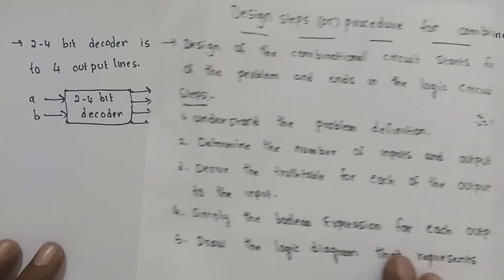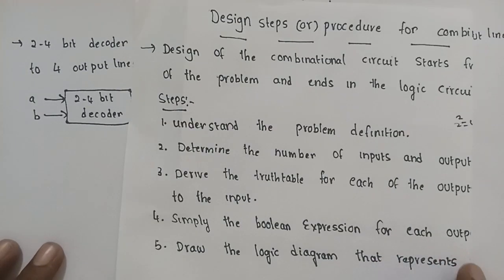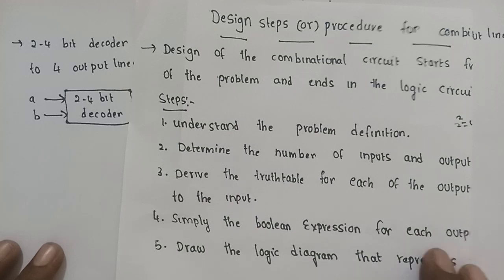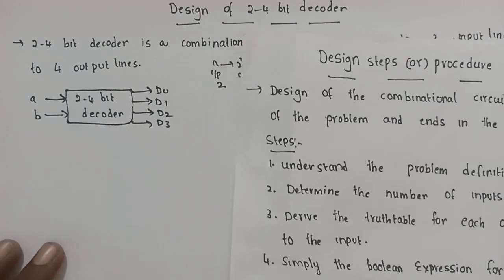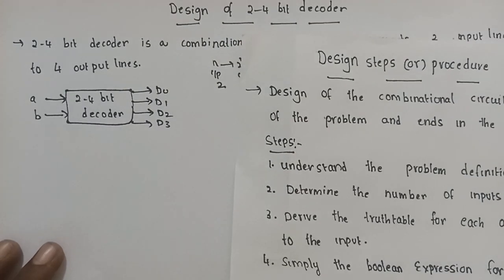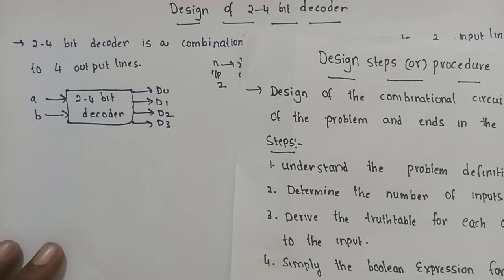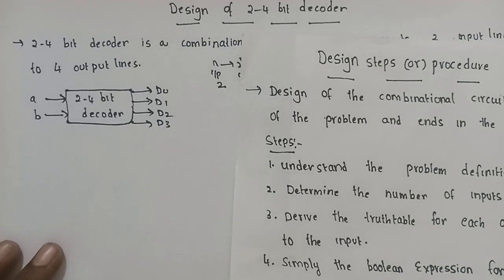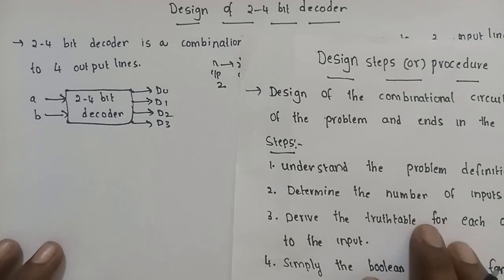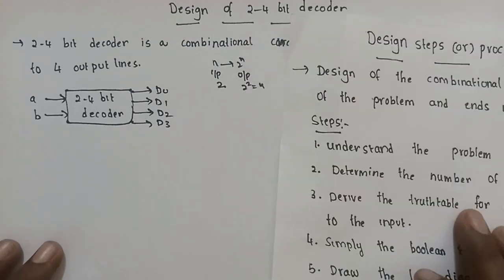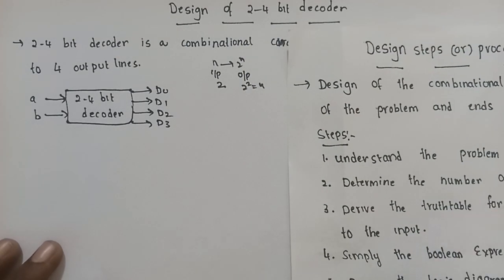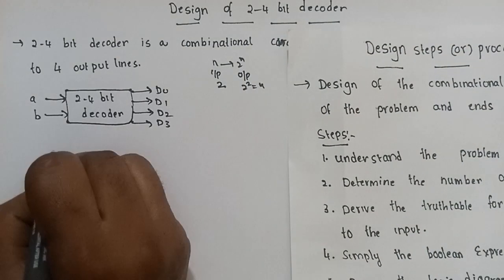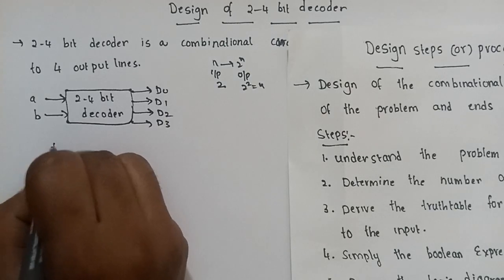The third step is to write the truth table for each of the outputs from the given inputs. We need to define the output for each combination of inputs in the truth table.